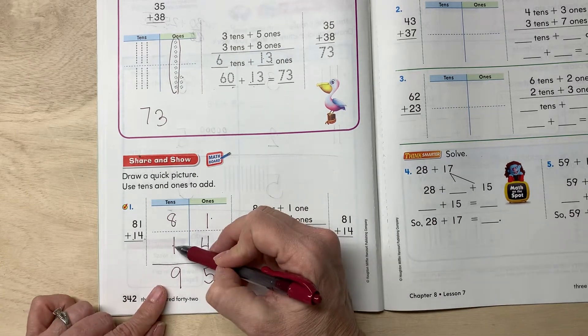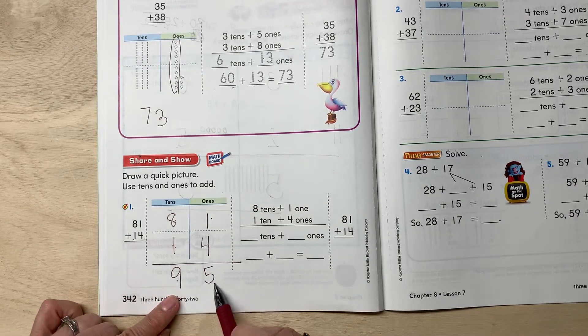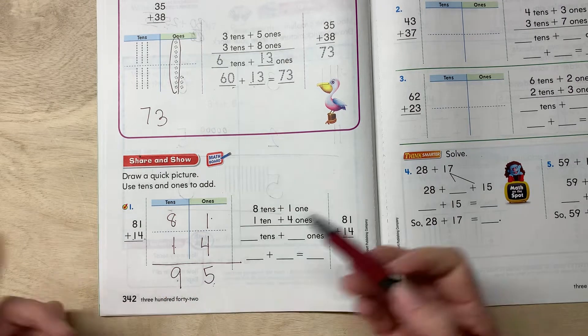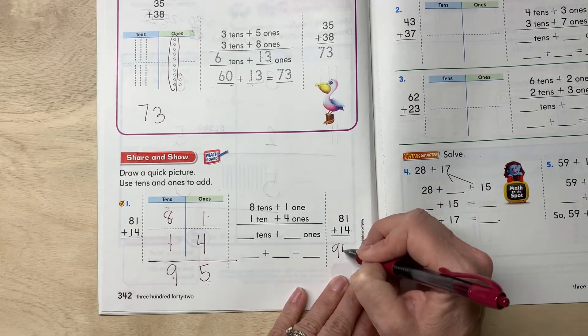I mean, sorry, eight tens and one ten is nine tens. So nine tens and five ones is 95. So 81 plus 14 is 95.